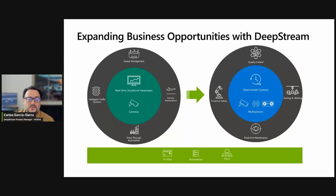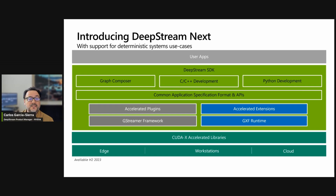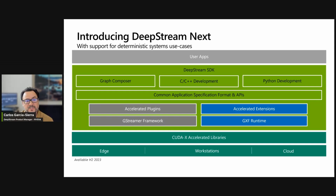To support these use cases, we recently introduced a GXF Runtime Accelerator that works in conjunction with GStreamer, which is the foundation of Deepstream. Now you can have applications that run in GStreamer at full speed with millions of cameras in place, running accelerated extensions for real-time use cases. Everything runs from Edge, Workstations, and Cloud, and benefits from zero memory copy between extensions and plugins, with development in Graph Composer, C++, or Python.